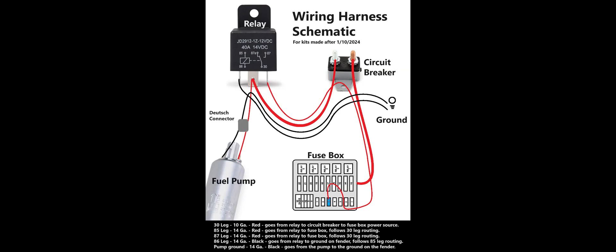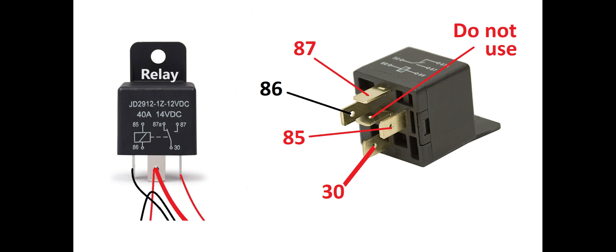In this video I'm going to start with a relay and move counterclockwise on this illustration. For our relay setup there are only four pins on the relay that you need to use. The 30 leg is a 10 gauge red wire that goes to the circuit breaker and continues on to the 12 volt source which in this case will be the power feed for the fuse box.